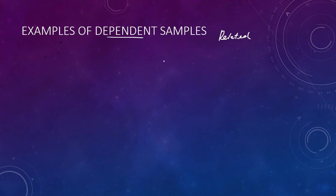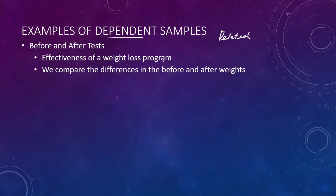The first example of dependent samples is before and after tests. We can take a weight loss program and check the person's weight before the program and after the program. This is an example of dependent samples because we're talking about the same individual — they're being tested before and they're being tested after.